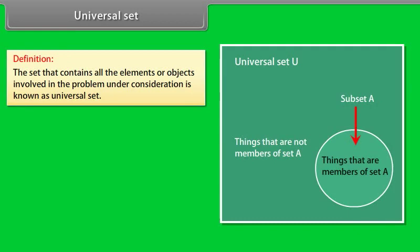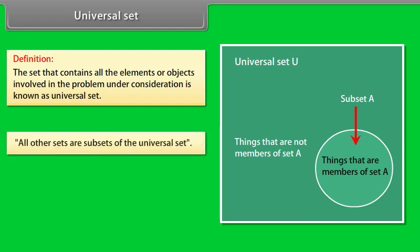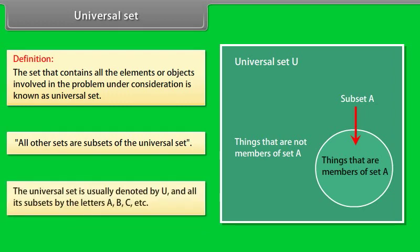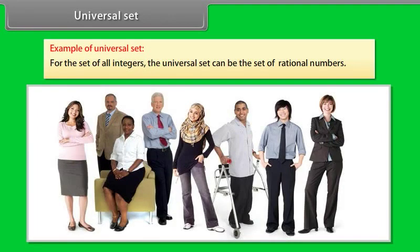Universal set. The set that contains all the elements or objects involved in the problem under consideration is known as universal set. All other sets are subsets of the universal set. The universal set is usually denoted by U and all its subsets by the letters A, B, C, etc. Example of universal set: For the set of all integers, the universal set can be the set of rational numbers.